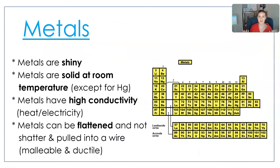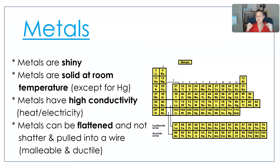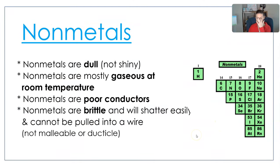Let's start with metals. Metals are shiny, and they're solid at room temperature — except for mercury, which has the chemical symbol Hg. Metals have high conductivity, meaning they can conduct heat and electricity. Metals are also malleable, meaning they can be flattened out. If you were to take a hammer and bang on a metal it would flatten out and not shatter. Metals are also ductile, meaning they can be pulled into wire.